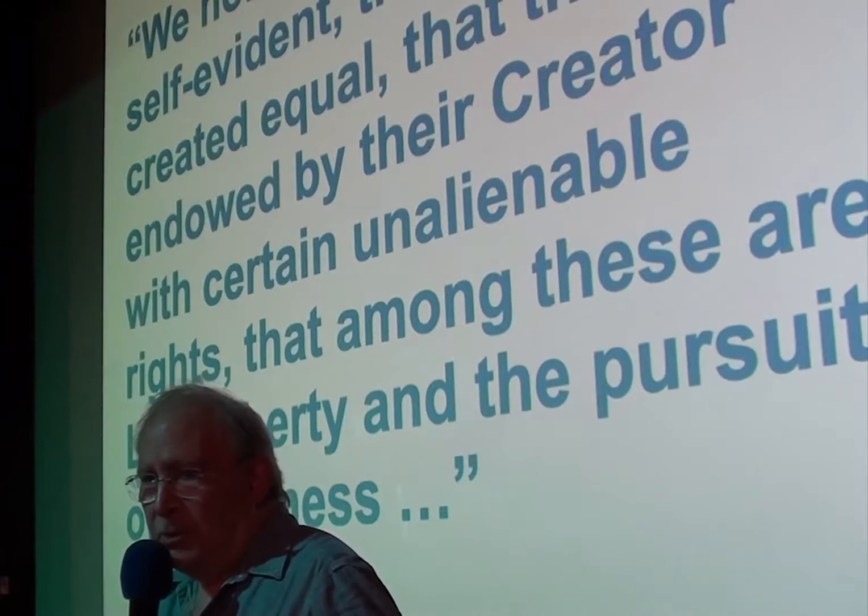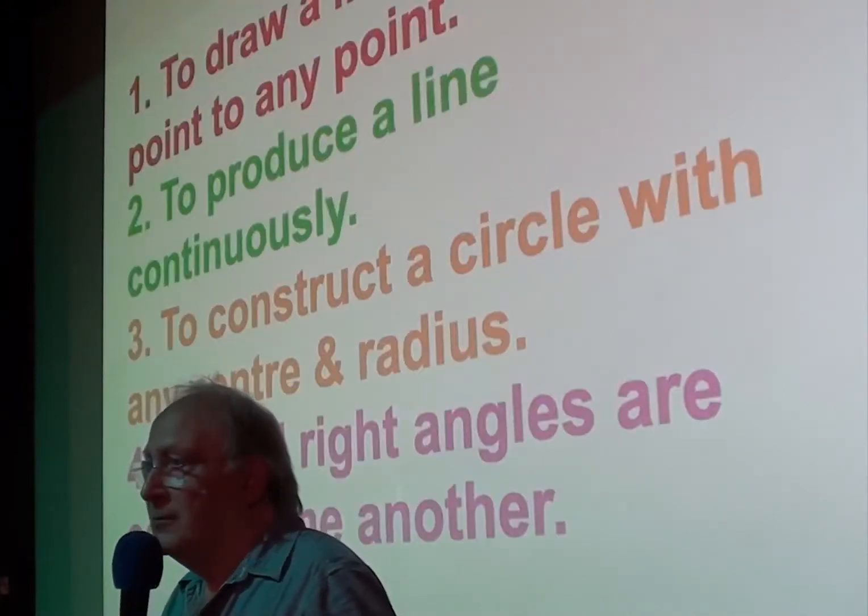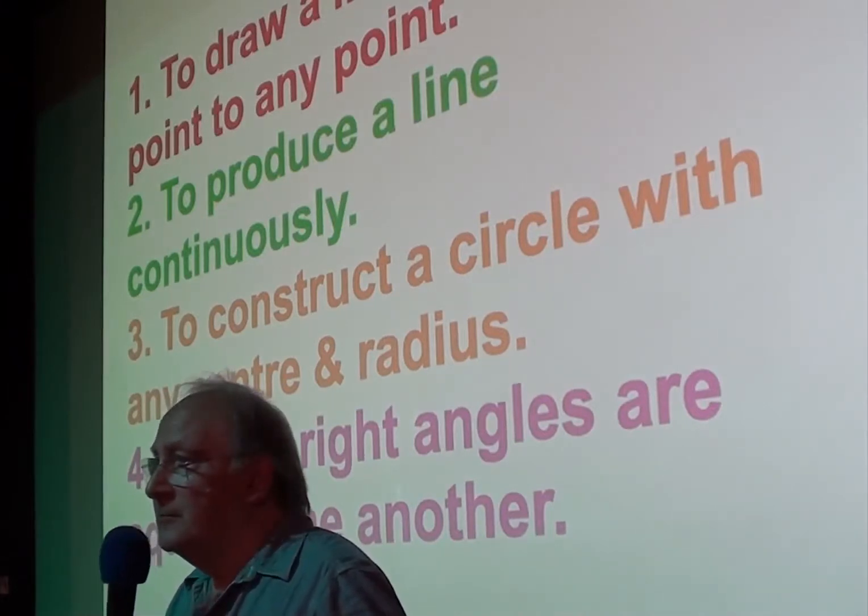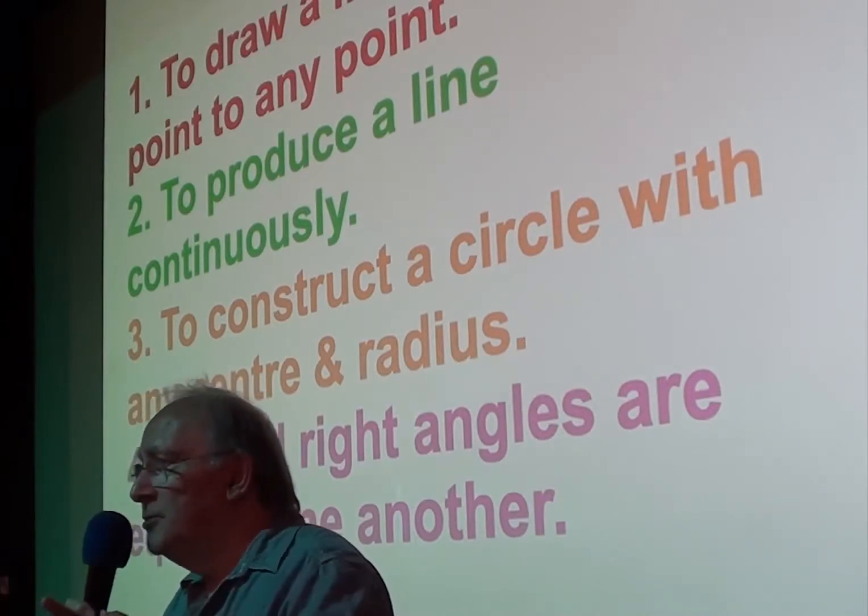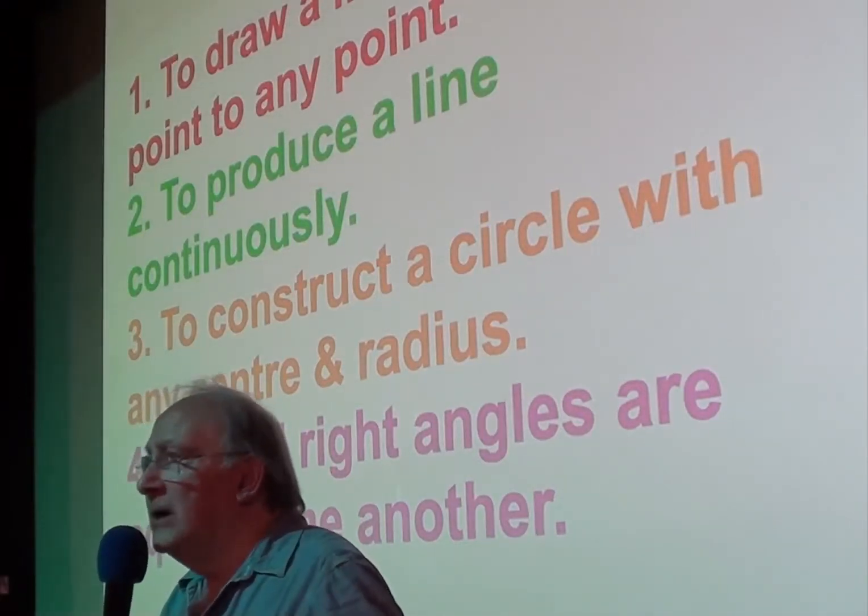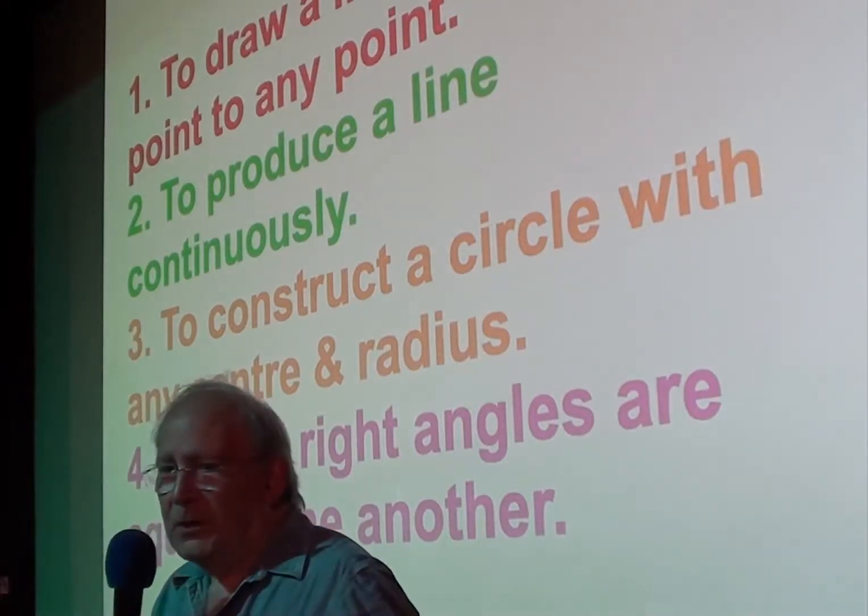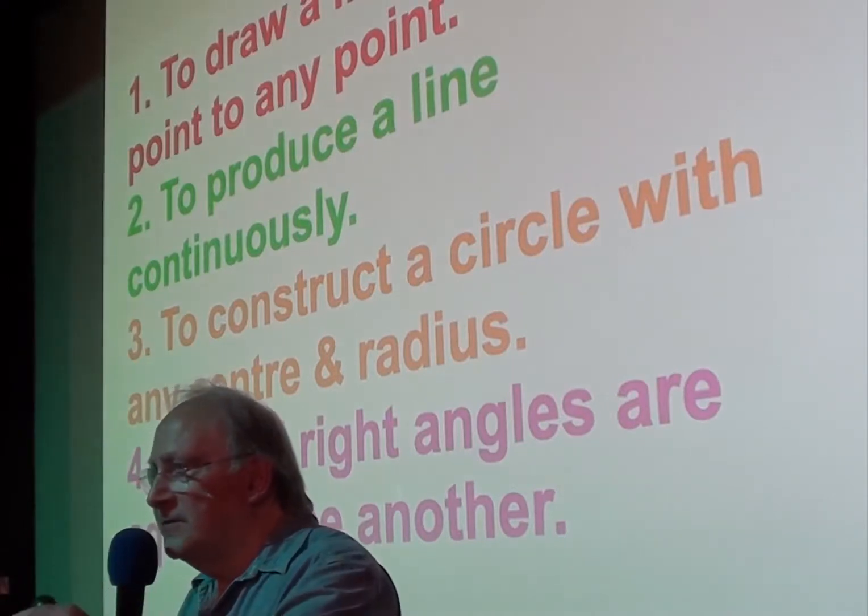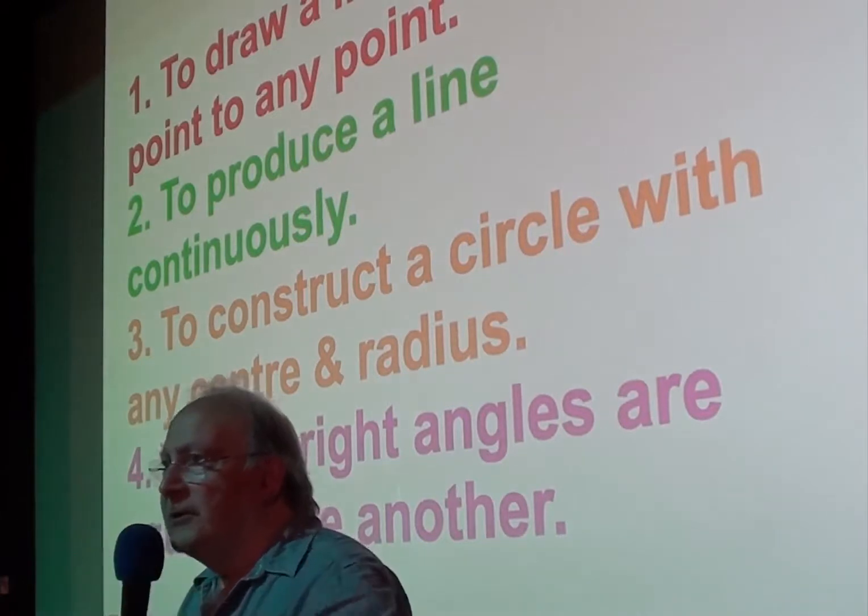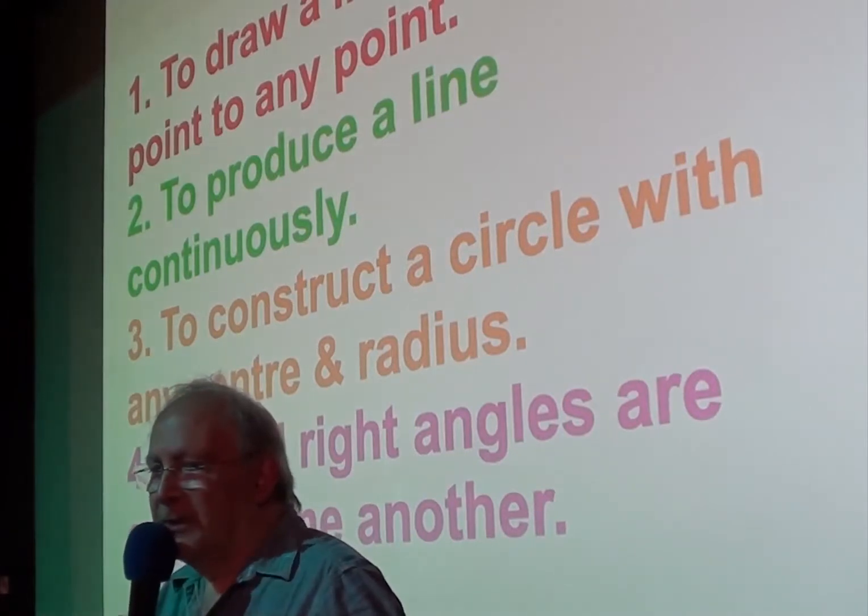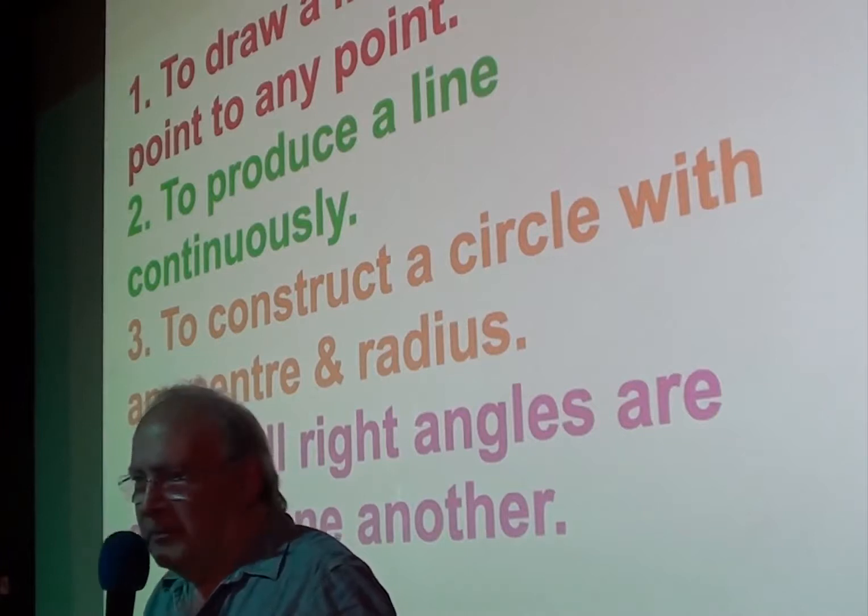Okay, so what were these five axioms? I'm going to show you the first four. Right, to draw a line from any point to any point. If you've got two points, you can join them up with a line. To produce a line continuously. So if you've got a line, you can make it longer, basically. You construct a circle with any centre and radius. So if you're given a specific centre circle and how long the radius is, theoretically, you can draw that circle. Number four, that all right angles are equal to one another. A right angle is a right angle, they're obviously the same thing.